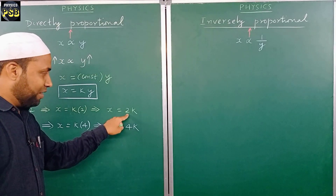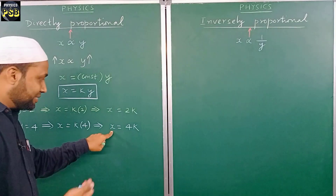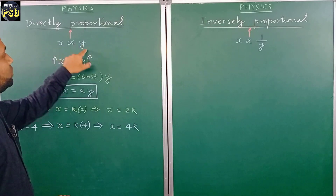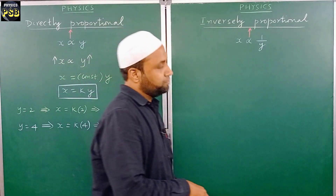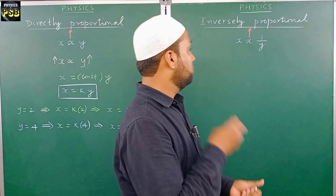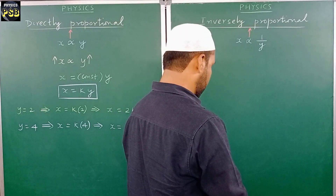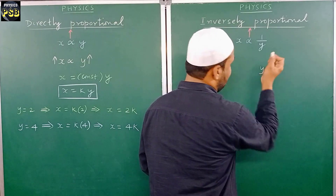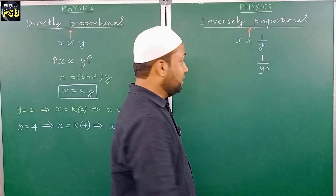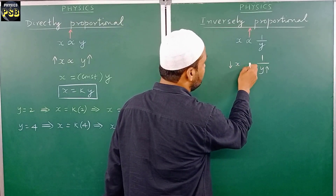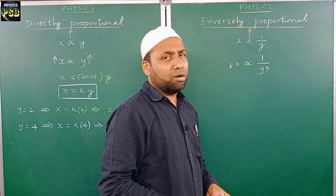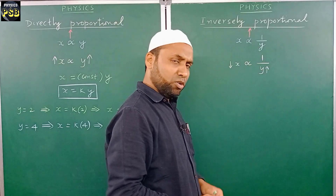This clearly shows that when we increased the value of y, the value of x also increased — earlier it was 2k, and when y increased to 4, x also increased to 4k. So we can conclude that x is directly proportional to y. Now let's come to the other expression. This expression is read as x is inversely proportional to y. When the value of y is increased, y is present in the denominator, so the value of x decreases.